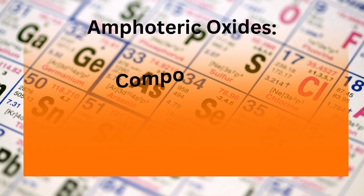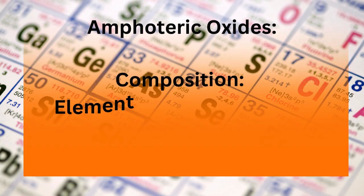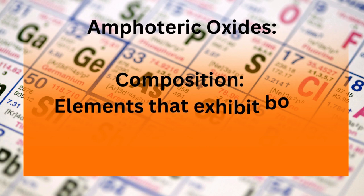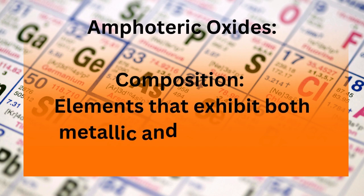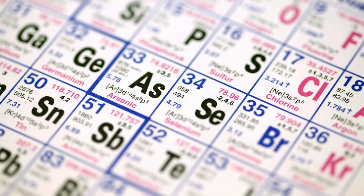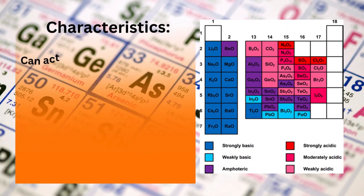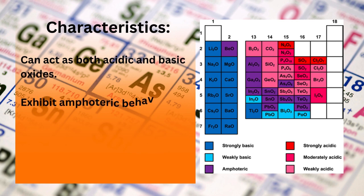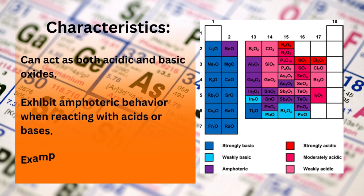Amphoteric oxides are composed of elements that exhibit both metallic and non-metallic properties. Their characteristics include the ability to act as both acidic and basic oxides, exhibiting amphoteric behavior when reacting with acids or bases.